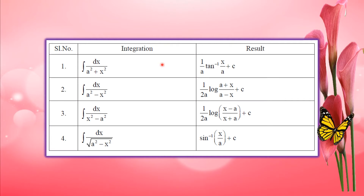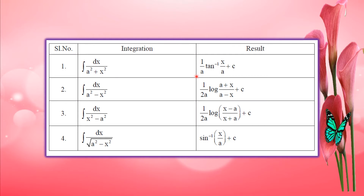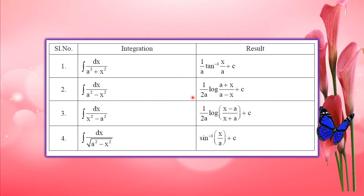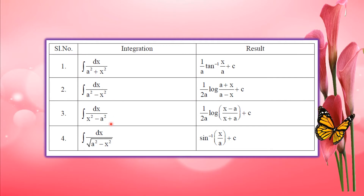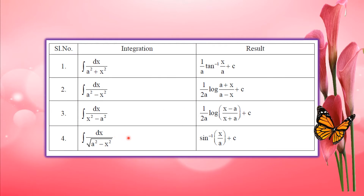Standard results: Integral of dx by a squared plus x squared equals 1 by a times tan inverse x by a. Integral of dx divided by a squared minus x squared equals 1 by 2a times log of a plus x divided by a minus x. Integral of dx by x squared minus a squared equals 1 by 2a times log of x minus a divided by x plus a. Integral of dx divided by root of a squared minus x squared equals sin inverse x by a plus c.